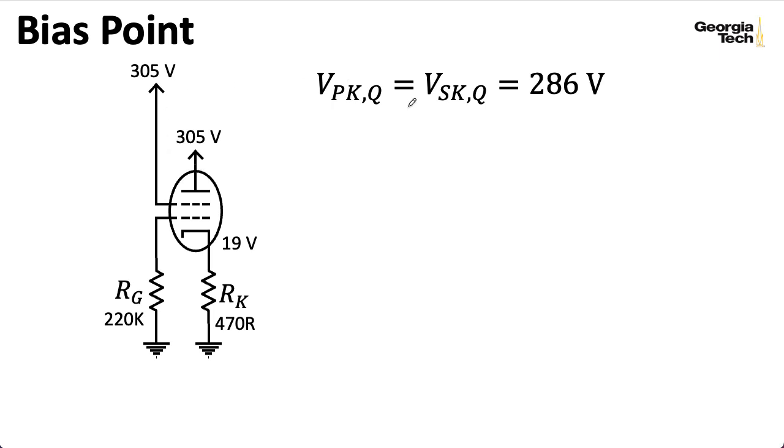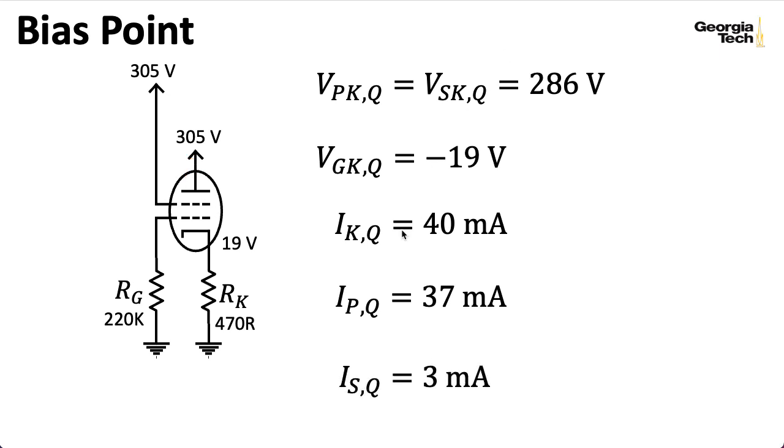In that lecture, we discovered that the plate-to-cathode and screen-to-cathode voltage are both 286 volts. I want to emphasize that it's not always the case that these quantities are the same. Sometimes the screen-to-cathode voltage will be a little less than the plate-to-cathode voltage. The grid-to-cathode voltage is easily determined to be minus 19 volts. The current through the cathode turns out to be 40 milliamps, and that's split between the plate and the screen. The current through the plate is actually 37 milliamps, and the current through the screen is then obviously 3 milliamps.